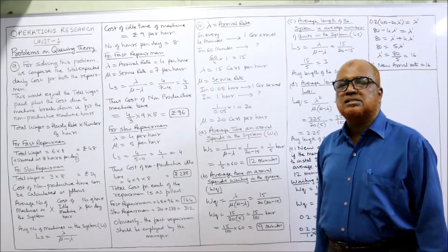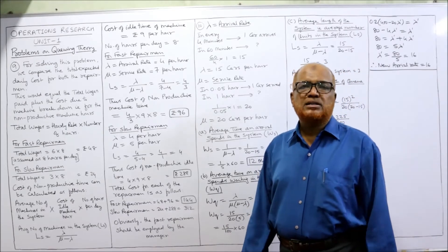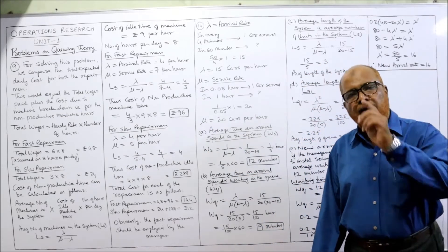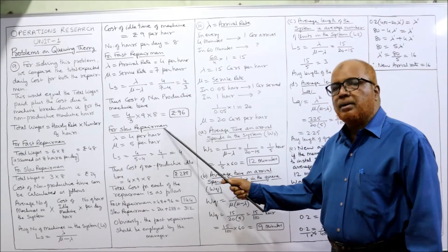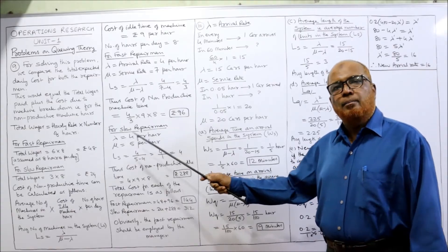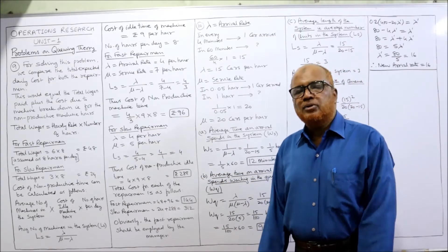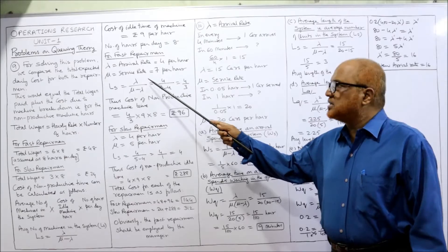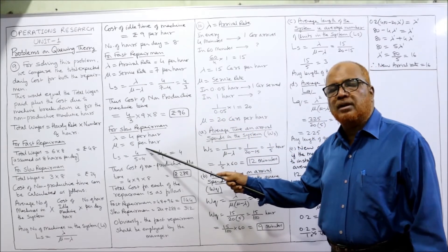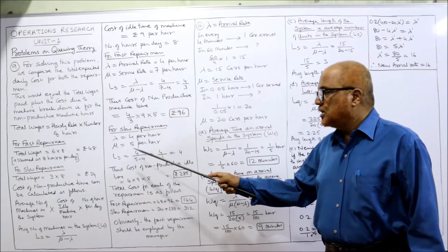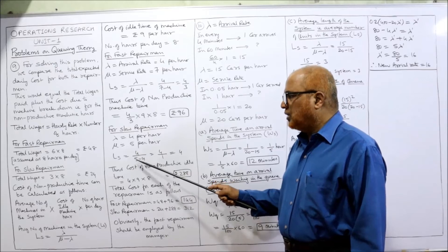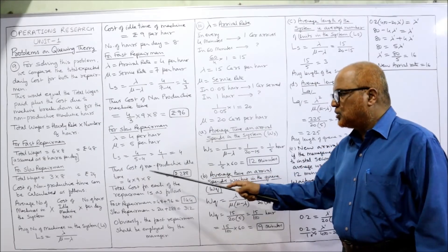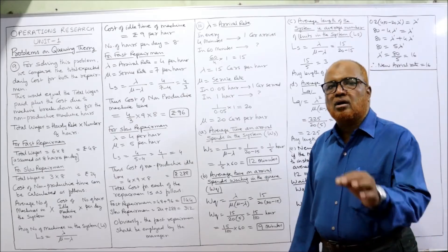That gives four times nine times eight divided by three, which equals 96 rupees — the cost of non-productive idle time for the fast repairman. For the slow repairman: lambda is four per hour, mu is five per hour. So Ls equals four divided by five minus four, which equals four.